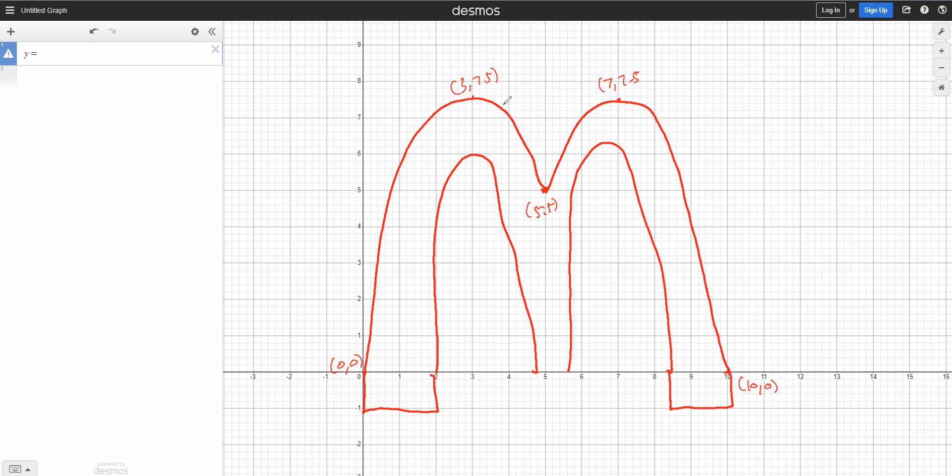So for this parabola over here, I can use the form y equals a times x minus p squared plus q, where the turning point is given by pq. And in this case, it's 3 and 7.5. And if I substitute x equals 3 and y equals 7.5, so a is going to be equal to a multiplied by that.